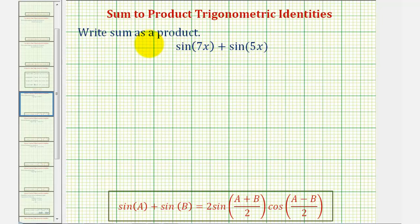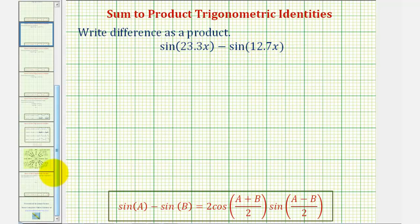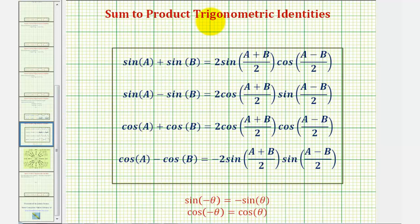Welcome to two examples where we'll write a sum involving sine and a difference involving sine as a product. We'll first write sine(7x) plus sine(5x) as a product, and then we'll write sine(23.3x) minus sine(12.7x) as a product. Before we begin, let's review the four sum-to-product trig identities given here.